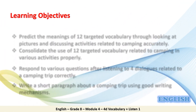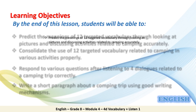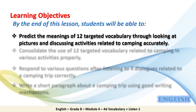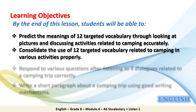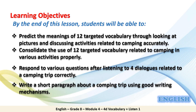In this lesson, we are going to cover four main objectives. By the end of this lesson, students will be able to: 1. Predict the meanings of 12 targeted vocabulary words through looking at pictures and discussing activities related to camping accurately. 2. Consolidate the use of 12 targeted vocabulary words related to camping in various activities properly. 3. Respond to various questions after listening to four dialogues related to a camping trip correctly. 4. Write a short paragraph about a camping trip using good writing mechanisms.